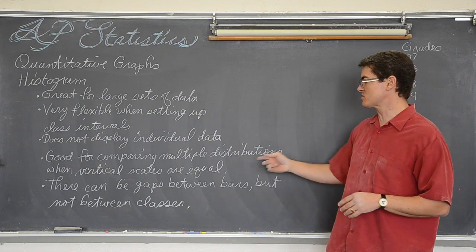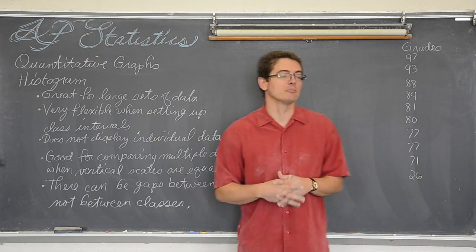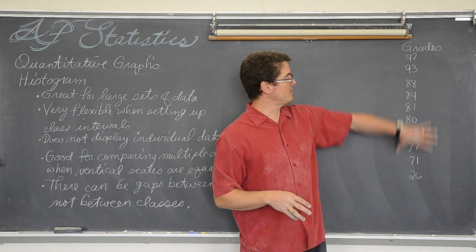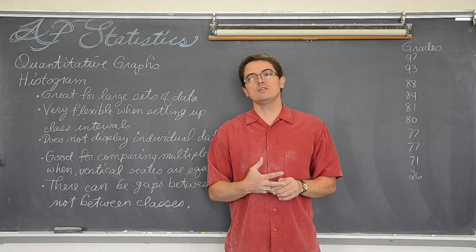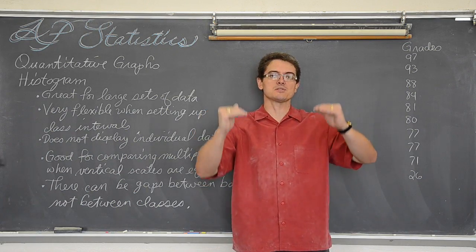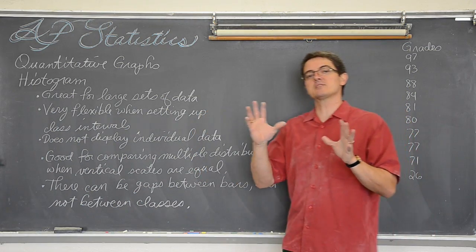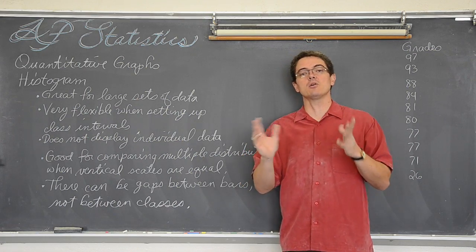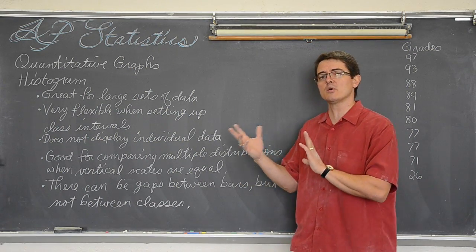Good for comparing multiple distributions when your vertical scales are equal. You will probably find examples of that in your book. We are going to make just one histogram here, I believe, in the time that we have allotted. But if you keep your vertical scales the same, you can look at two side-by-side histograms, like two side-by-side bar graphs.